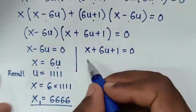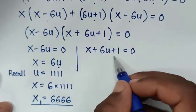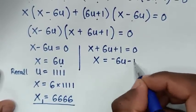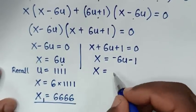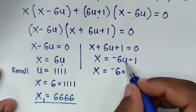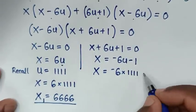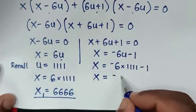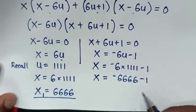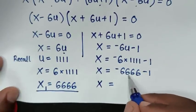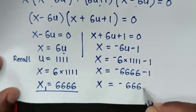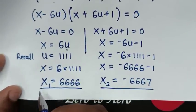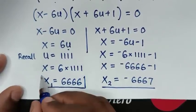To solve from the second solution, x plus 6u plus 1 equals 0, we take 6u and 1 to the other side. So x equals negative 6u minus 1, which is negative 6 times 1111 minus 1, giving x equals negative 6666 minus 1, so x equals negative 6667. This is the second value of x. Therefore the two values of x are 6666 and negative 6667.